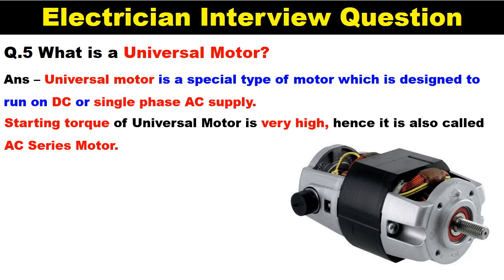So your answer should be: universal motor is a special type of motor which can work on both DC power supply and AC power supply. And the starting torque of a universal motor is very high, which is why it is also known as the series motor of AC.